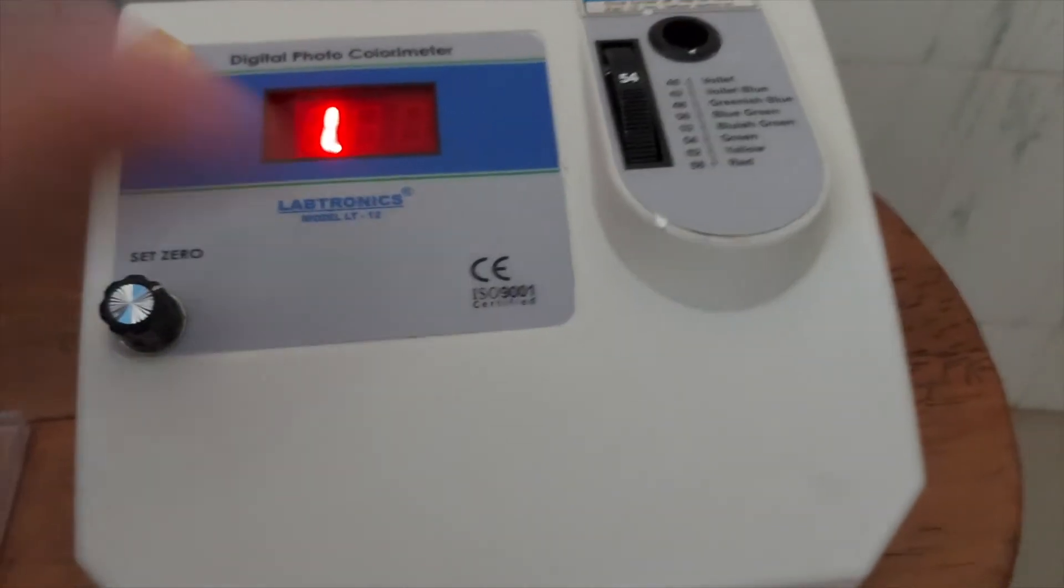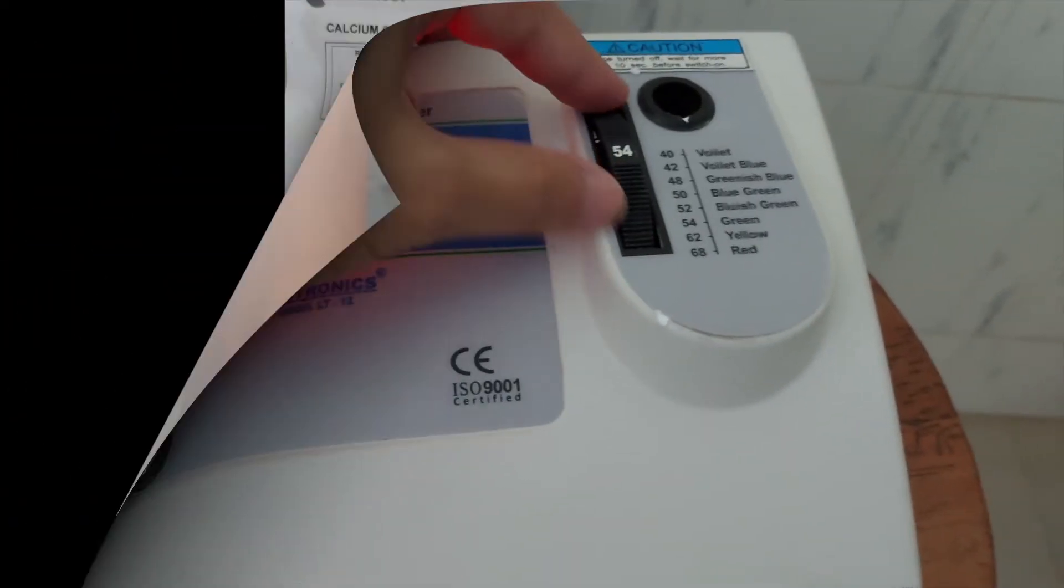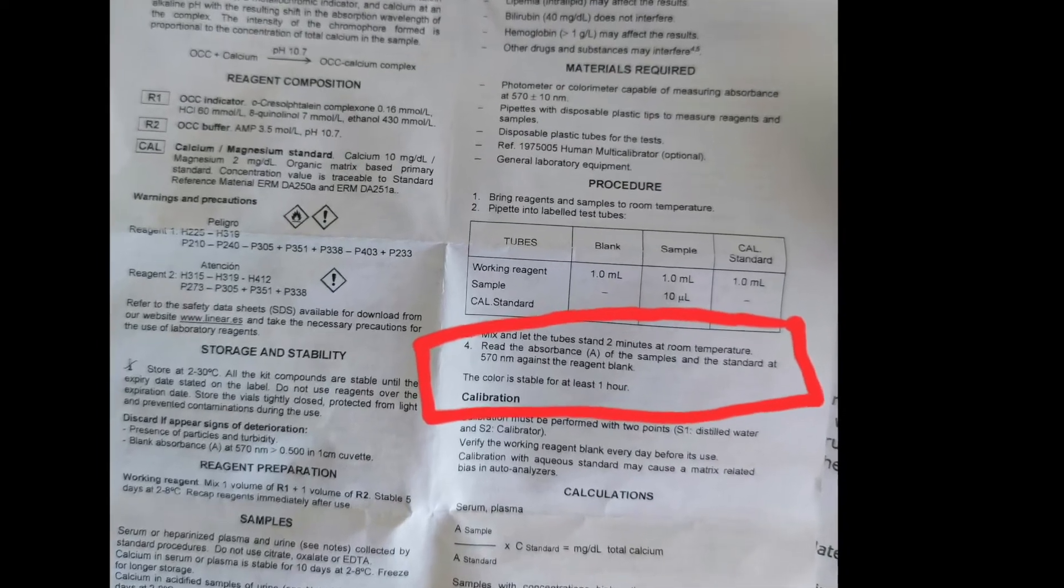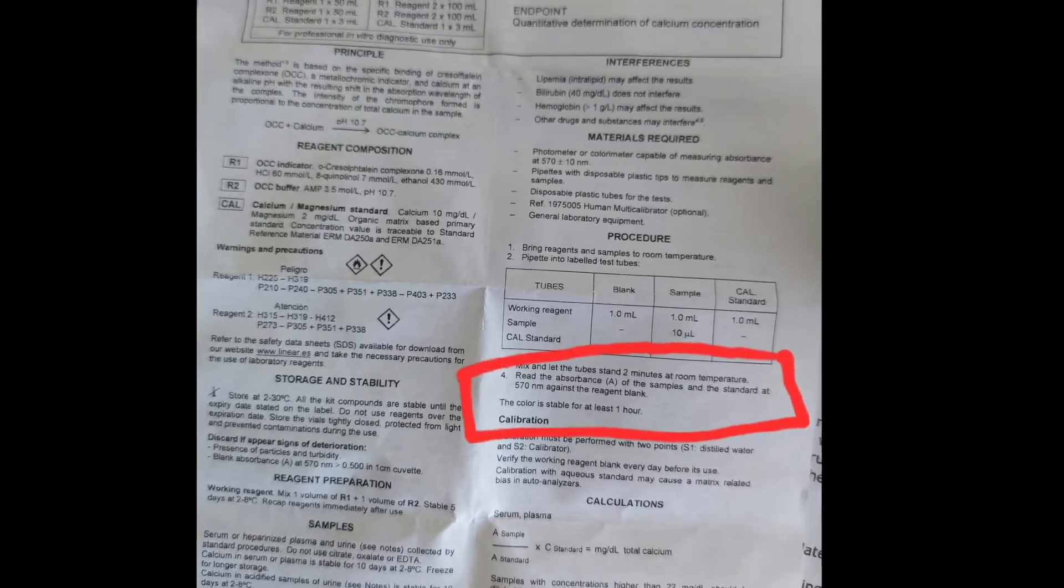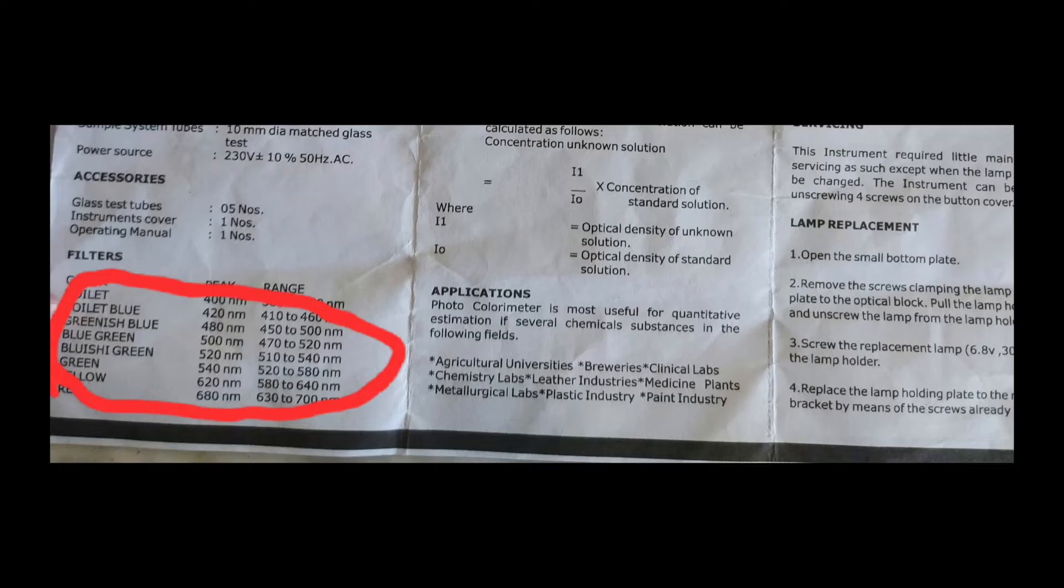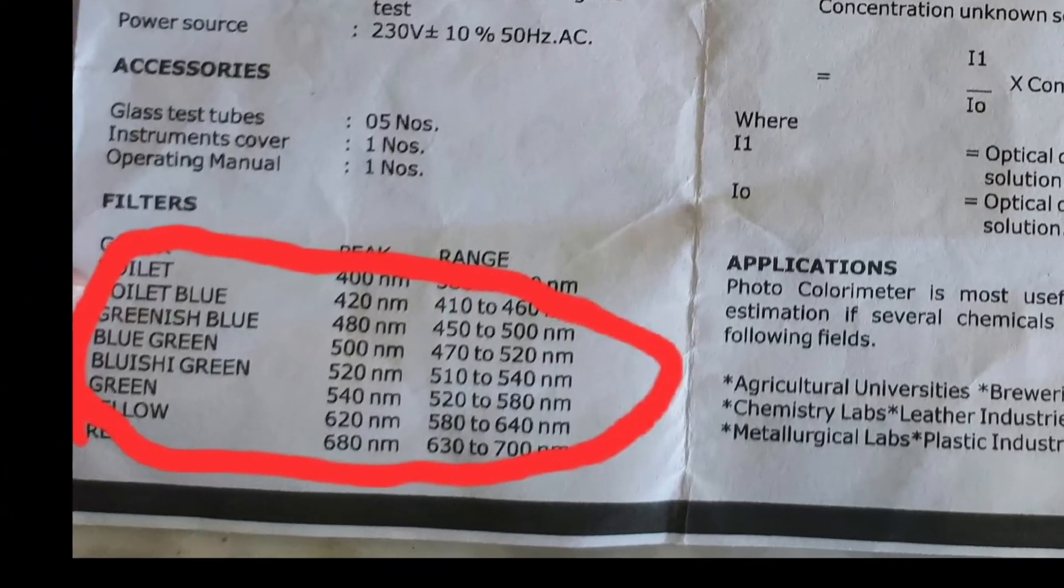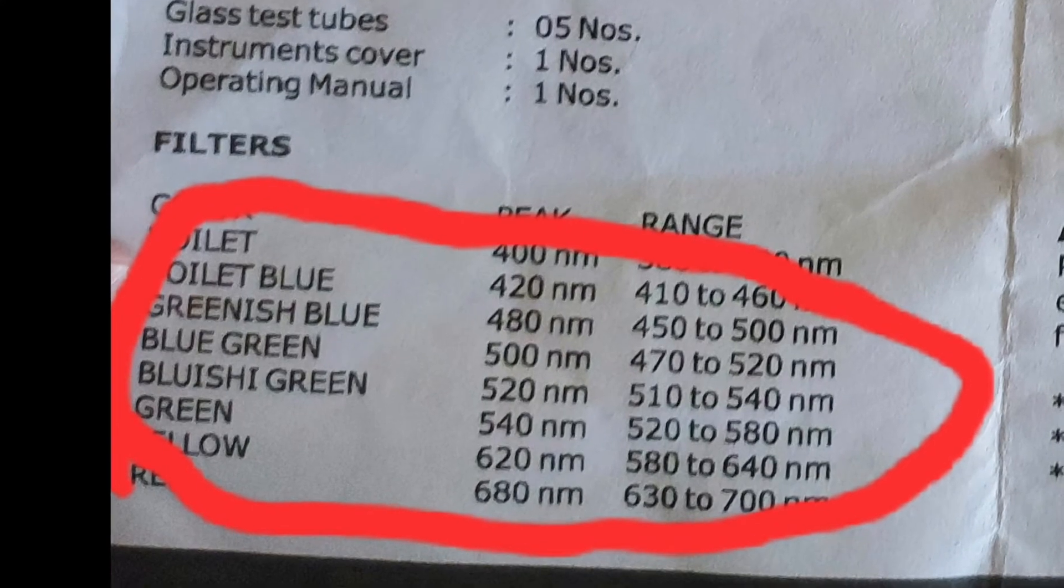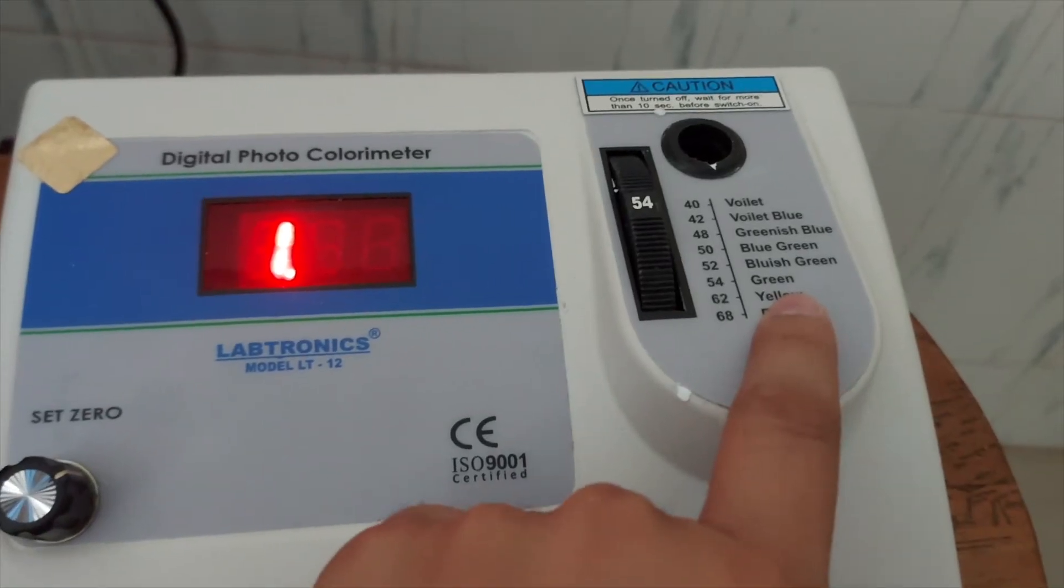At this point, we have to adjust the disk. As per the instruction, we have to take the reading at 570 nanometers, and the manual says it falls within the green range, so we have to set the disk to green, which is 54.